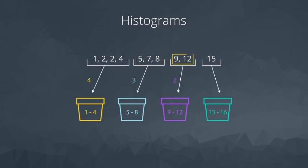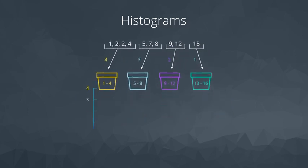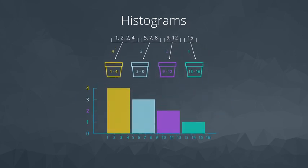Then these two values fall in this bin, and 15 falls into our last bin. The number of values in each bin determine the height of each histogram bar.